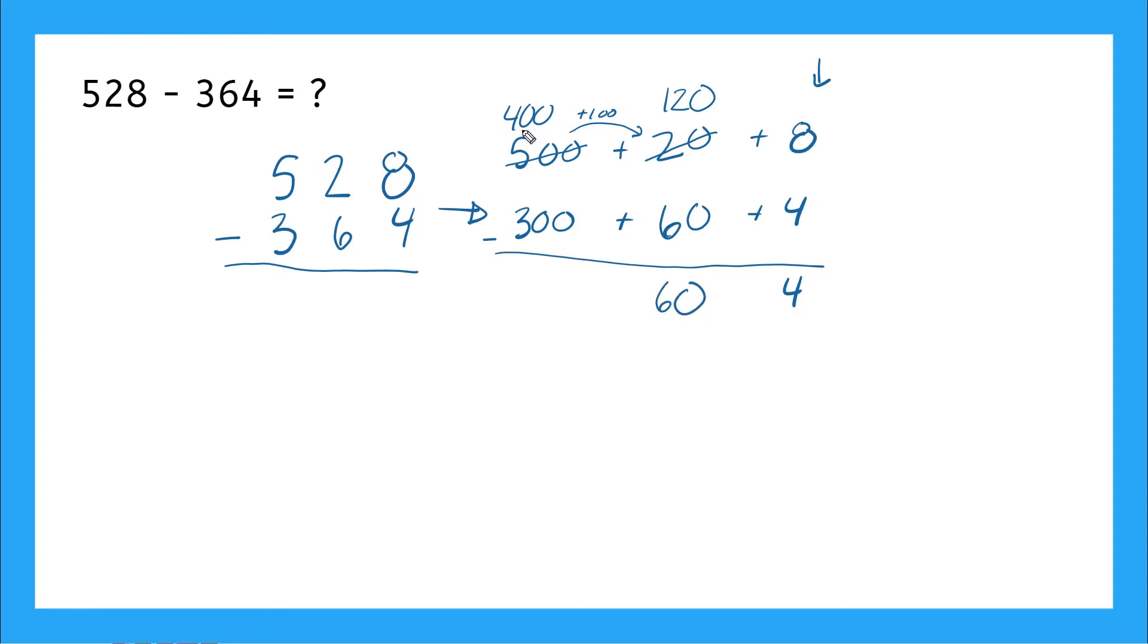Now 120 minus 60 gives me 60. Now I can go over to my hundreds place and I have 400 here. Remember, because I borrowed my hundred. So this is 400 minus 300. That gives me 100. And if I add all these up, I get 100 plus 60 plus 4 gives me 164. Perfect.